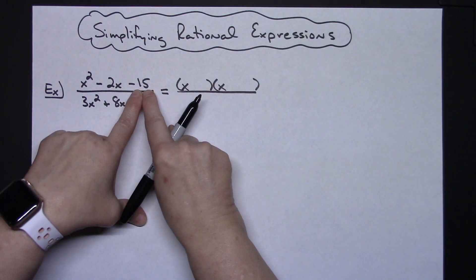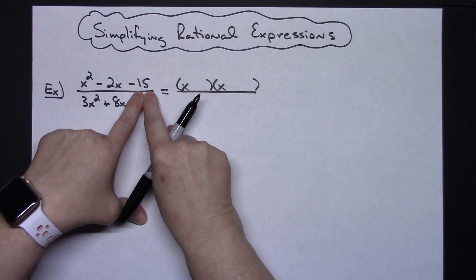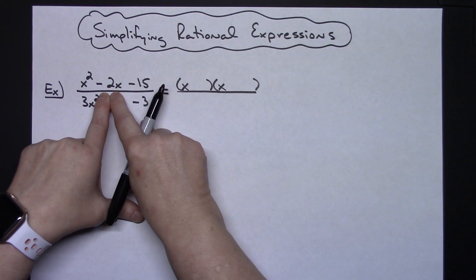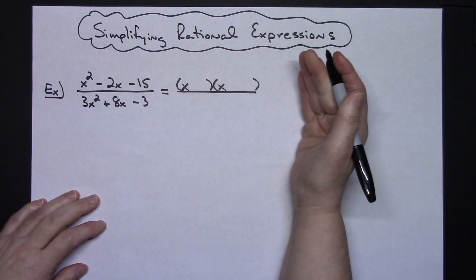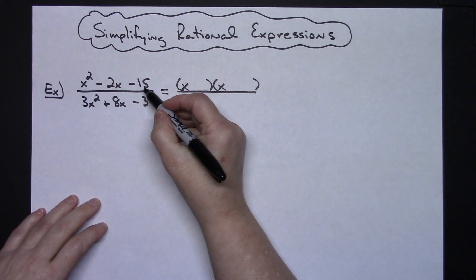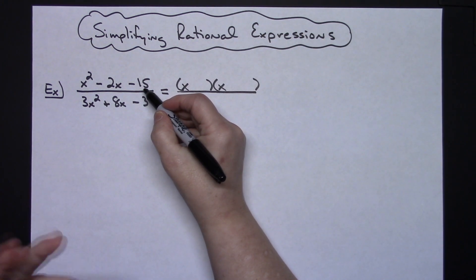I'm going to come up with factors that multiply together to get negative 15 but when added gives me a negative 2. You go through your process, you don't have any factors of 15. 1 and 15, 3 and 5 are your only choices.